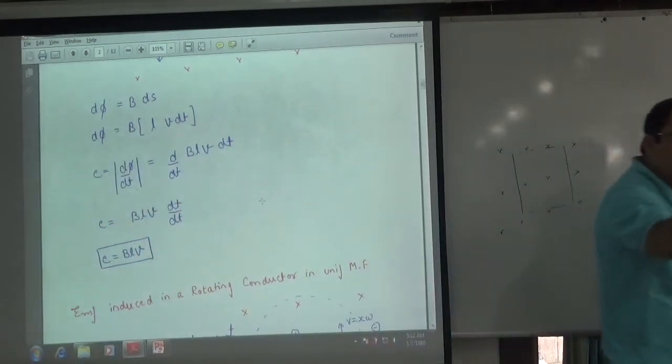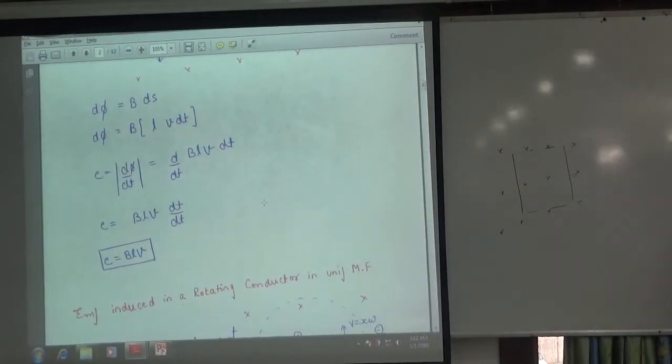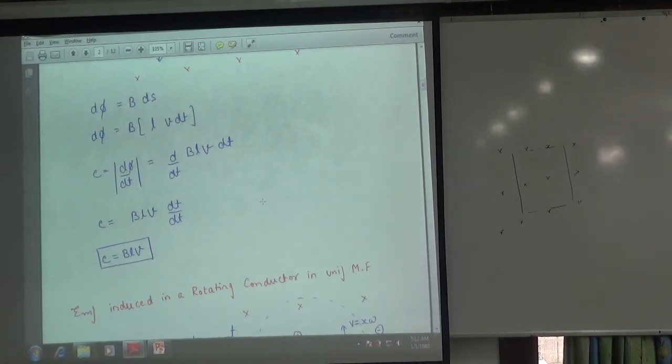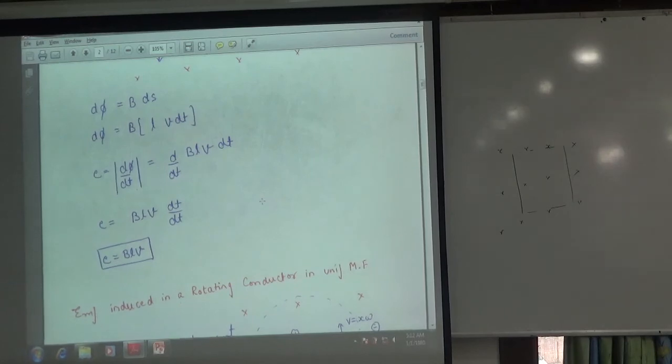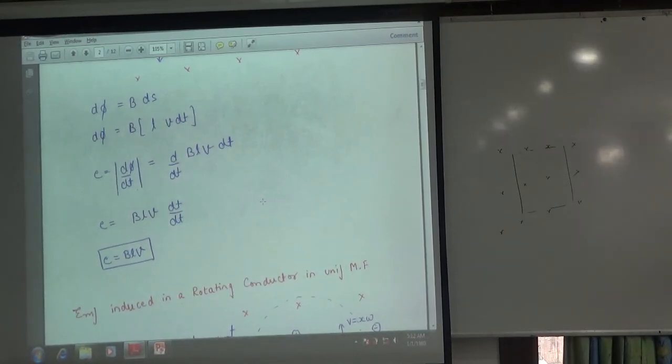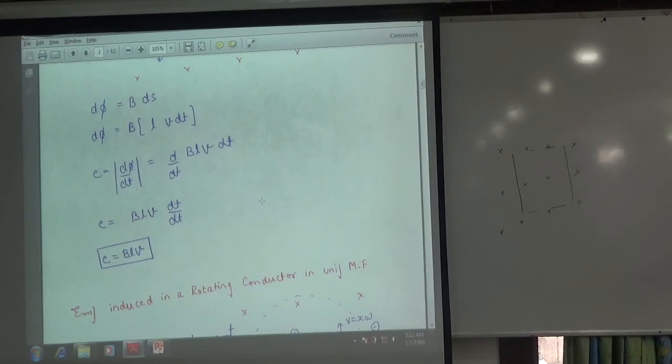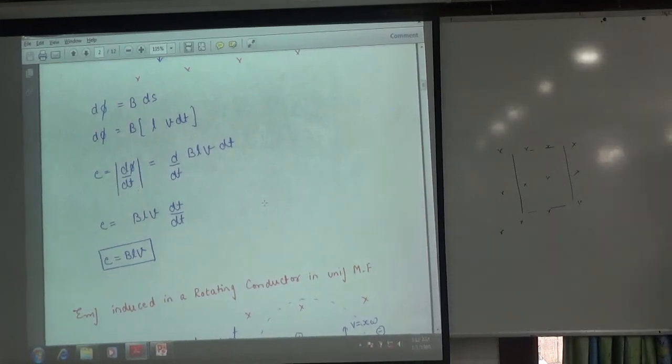BLV dt divided by dt, one, and the answer comes out BLV. I mean method two is easier than method one. So method one, let's just teach that Faraday has done the same work but in a little easier way.